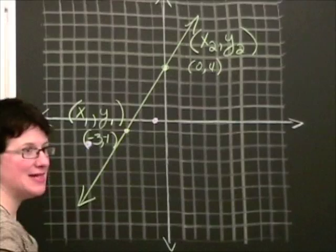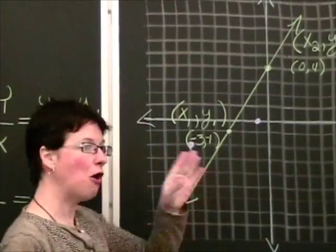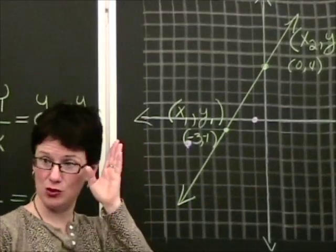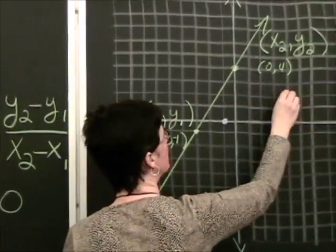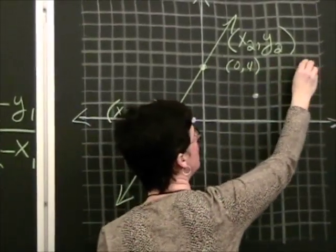Now the beauty of this is, slope is defined as a constant rate of change. So I can get all the other points on this line by just going up 2 over 5, up 2 over 5, up 2 over 5. So up 2, 1, 2, 3, 4, 5. Up 2, 1, 2, 3, 4, 5.